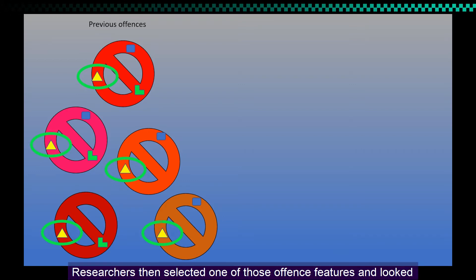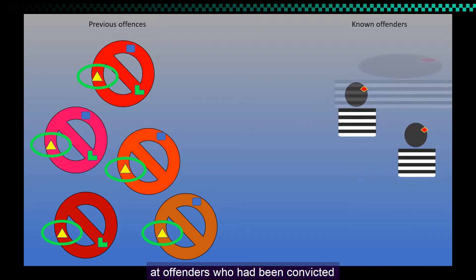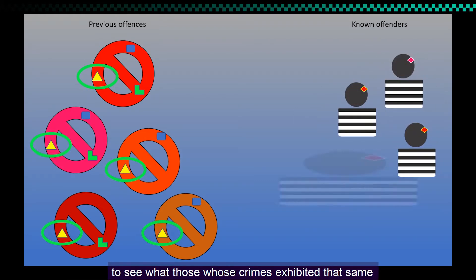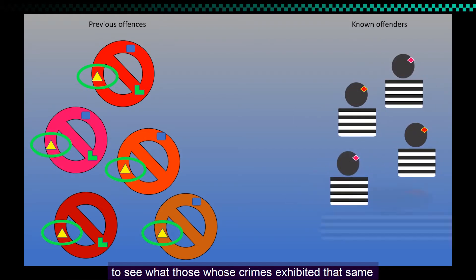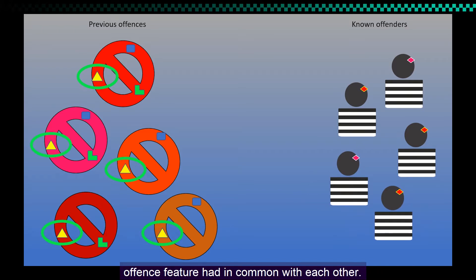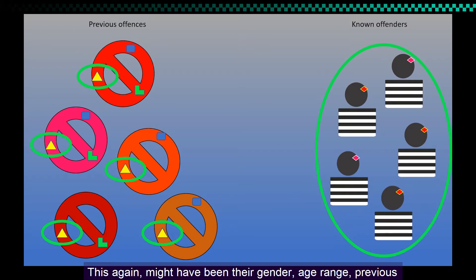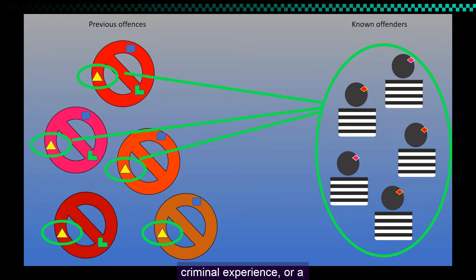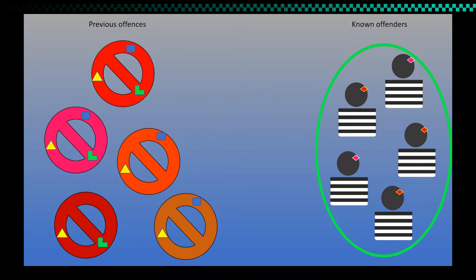Researchers then selected one of those offense features and looked at offenders who had been convicted to see what those whose crimes exhibited that same offense feature had in common with each other. This might have been their gender, age range, previous criminal experience, or specific mental health problem, for example.